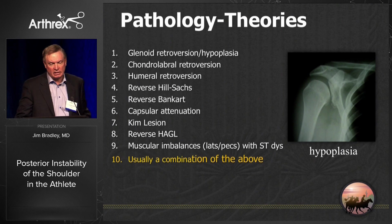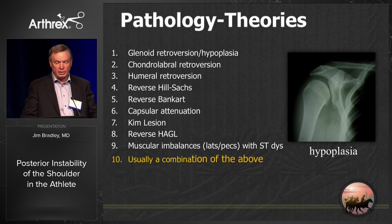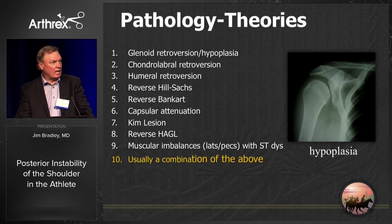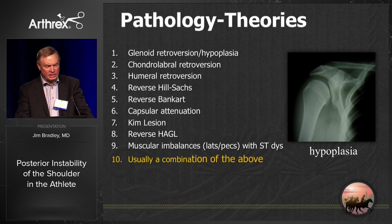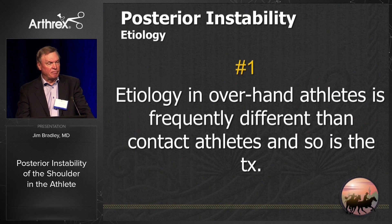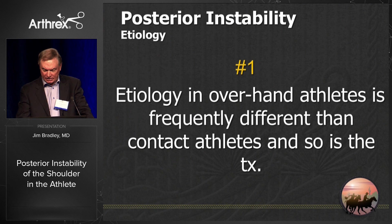The pathology of posterior instability has multiple different theories, ranging from glenoid retroversion and hypoplasia to muscular imbalances in throwers. My opinion is it's usually a combination of a couple of the above. The first thing I learned on etiology is that the etiology in overhand athletes is frequently different than contact athletes, and so is the treatment.